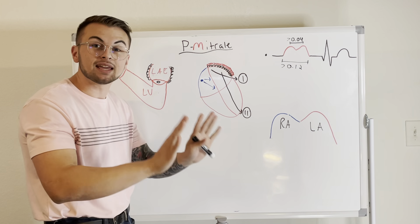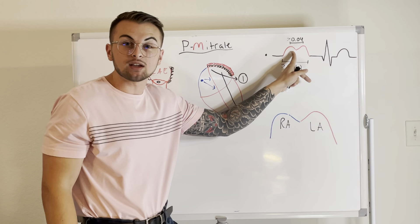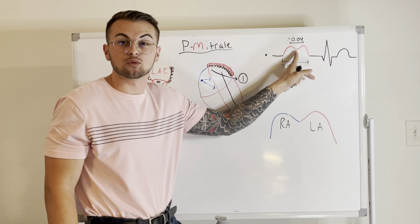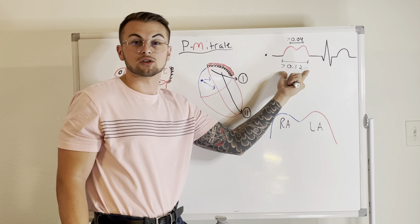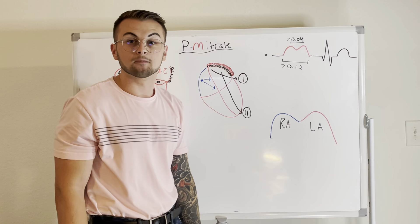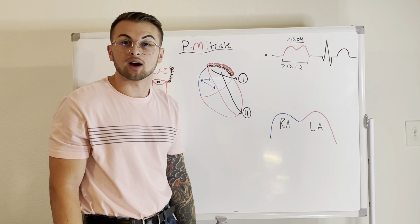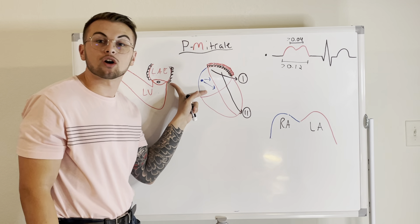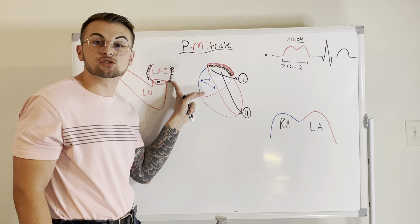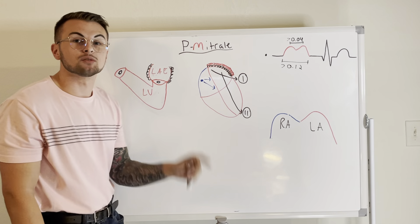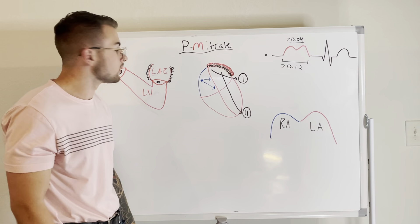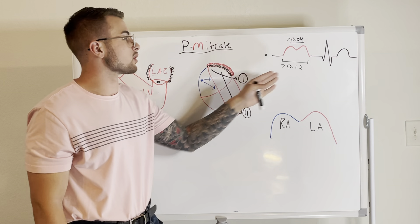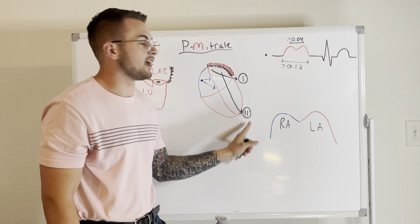In summary, P-mitrale is characterized by a notched P-wave with a length greater than 0.12 seconds and a notch greater than 0.04 seconds. Think: if it is greater than 3 small squares and has a notch greater than 1 small square in leads 1 and 2, then you likely have P-mitrale. P-mitrale is often indicative of left atrial enlargement due to mitral valve diseases like mitral stenosis, which requires the left atrium to become larger and floppier. The result is that the large left atrium gives us the M-wave or P-mitrale sign on our EKG in leads 1 and 2.